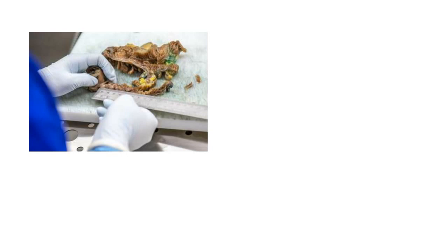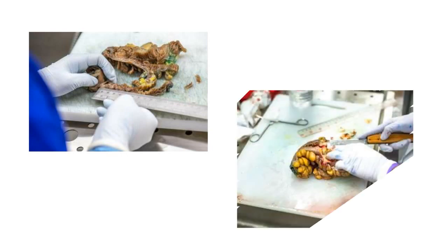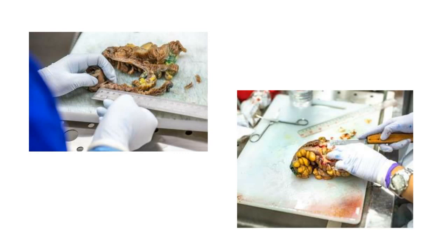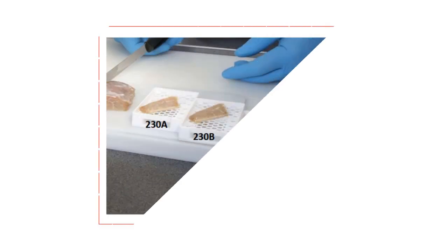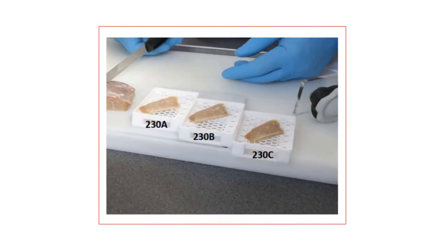At the grossing station, the biopsy is taken out of the formalin container. Measurements are taken such as size, shape, and presence of lesions or any other abnormality. The pathologist then cuts various sections from the biopsy and places them in cassettes with appropriate labeling. For example, if four sections are cut from a biopsy specimen with identifier 230, the cassettes will be labeled as 230A, 230B, 230C, and 230D, also mentioning the type of sections in each cassette.